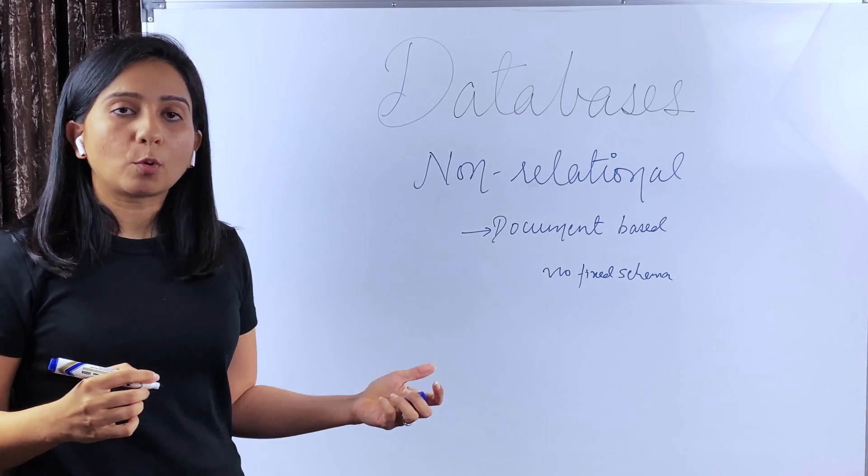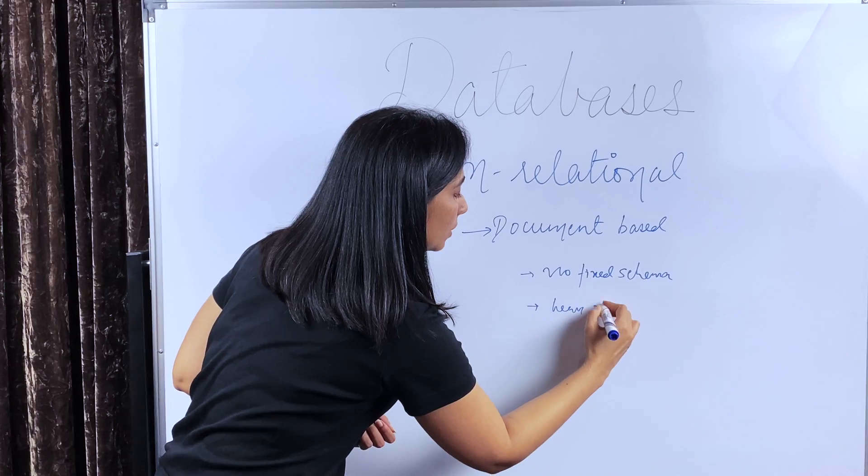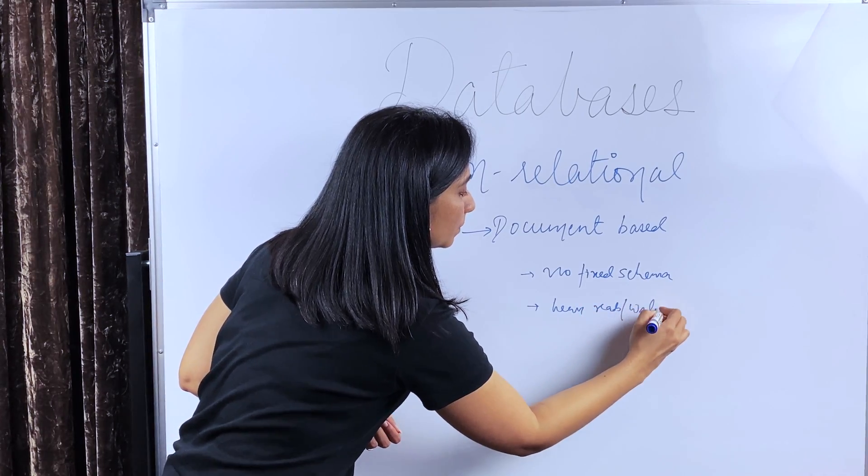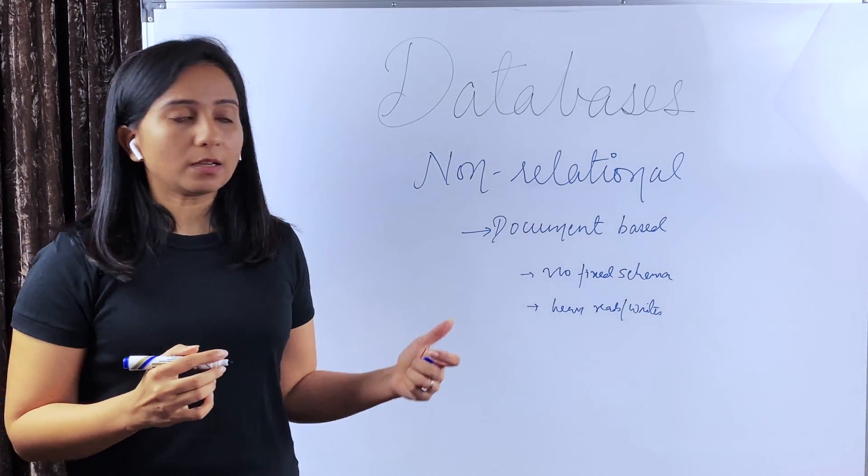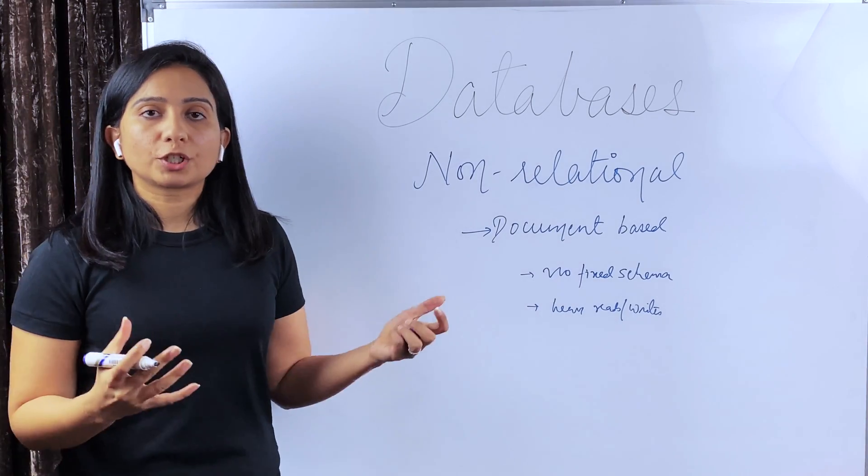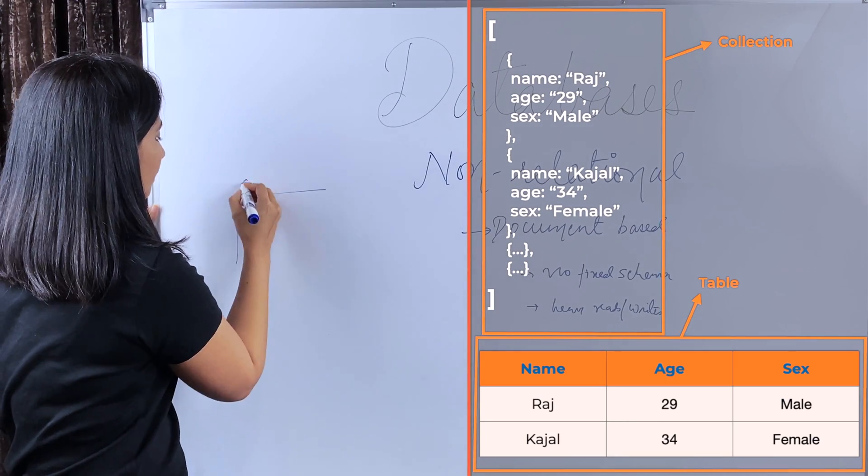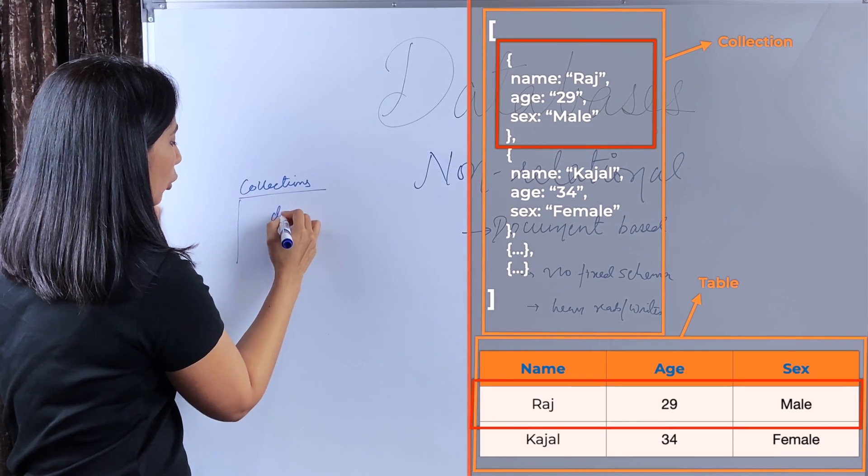And one more important point for document DBs is they can support heavy reads and writes. So let's see how a document based DB looks like. Just like in relational DBs, we have tables and rows. Document DBs have collections and documents.